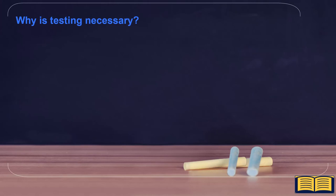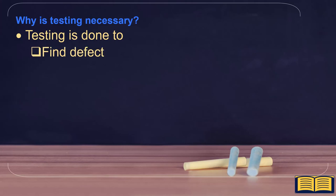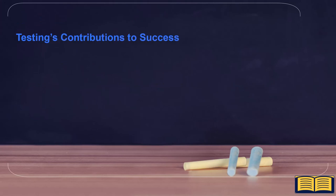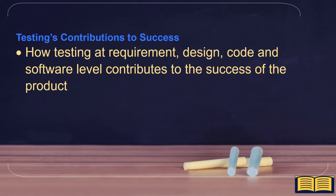We covered why testing is necessary: testing is done to find defects and verify contract fulfillment, and one needs to perform appropriate testing at appropriate levels. After that, we covered testing's contributions to success, where we saw how testing at requirement, design, code, and software levels contribute to the success of the product.